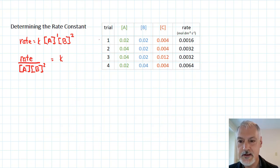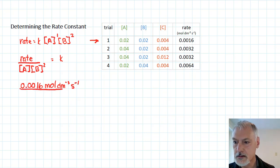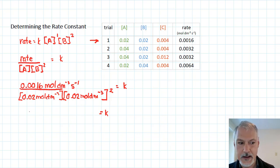Now, the values that I can use can be any one of these trials, so I can choose any row from up here and substitute those values into this expression to determine what the constant is. So I'm going to use the first trial conditions, and I have for that the rate, so 0.0016, and I'm going to show you the units as well as we go through this. So that's moles per decimeter cubed. And on the bottom, the concentration of A and the concentration of B squared. So I'll just do the math part first, I'll take this divided by this and this quantity squared.